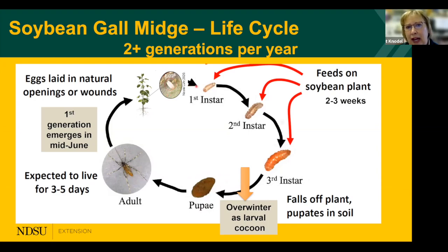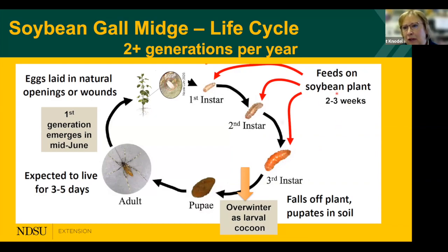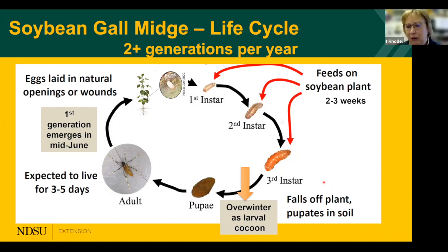The larvae hatch from the eggs and go through three growth stages called instars. When they first hatch, they're white in color, then change to orange or reddish-orange. They damage the soybean plant by extracting nutrients and water, feeding for about two to three weeks. If it's the last generation near fall, they drop off the plant and pupate as a prepupa in the soil.